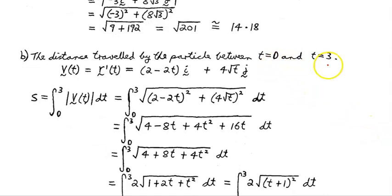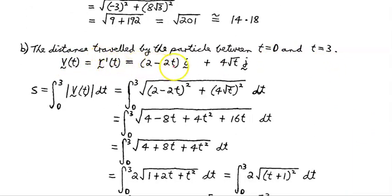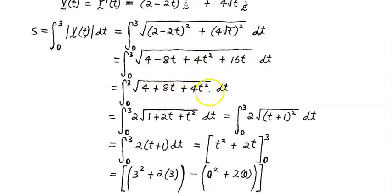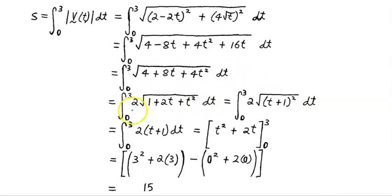Now let's find the distance actually travelled by the particle between t equals 0 and t equals 3. The velocity vector is R dash of t equals (2 minus 2t) i plus (4√t) j. The distance is the integral from 0 to 3 of the absolute value of the velocity vector dt. Expanding that out: 4 minus 8t plus 4t squared plus 16t. Tidying up: the square root of 4 plus 8t plus 4t squared dt. That becomes the integral from 0 to 3 of 2 times the square root of 1 plus 2t plus t squared dt, taking a factor of 4 out from under the square root sign to give 2.